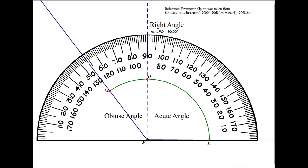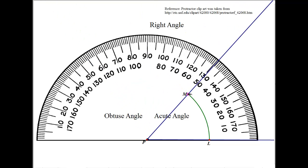To measure an angle, we can use a tool called a protractor. To do that, we place the protractor so that the little dot on the protractor aligns with the vertex of the angle, and then you measure it. For example, going from 0, 10, 20, 30, 40, 50 — so this is 50 degrees right there.